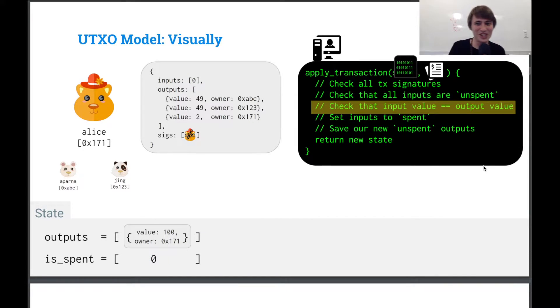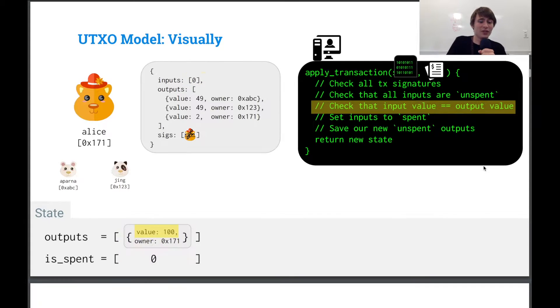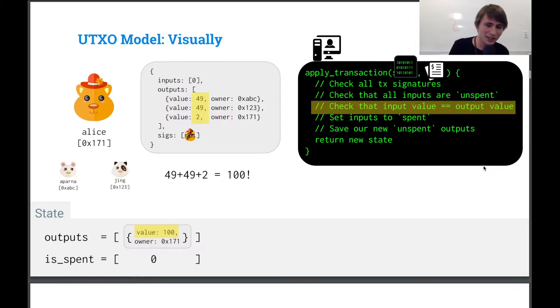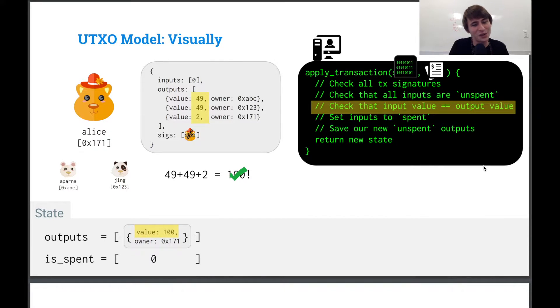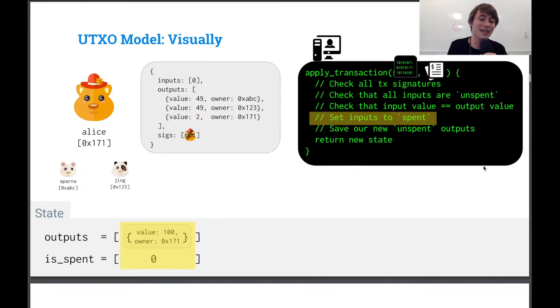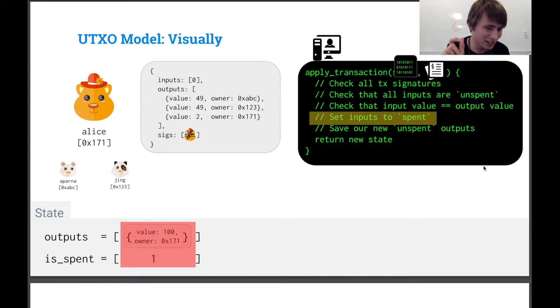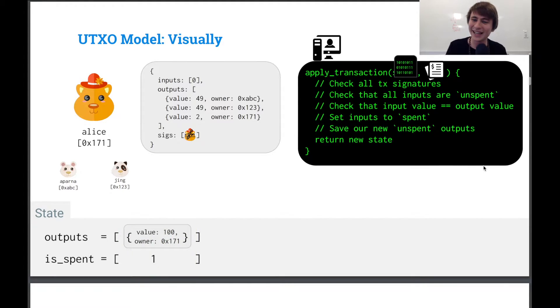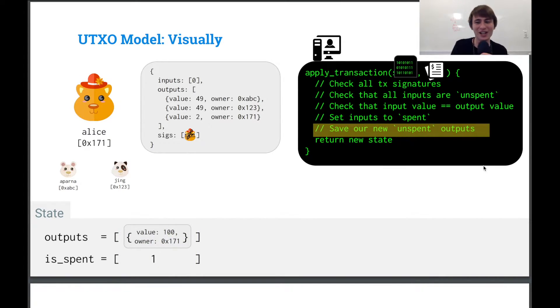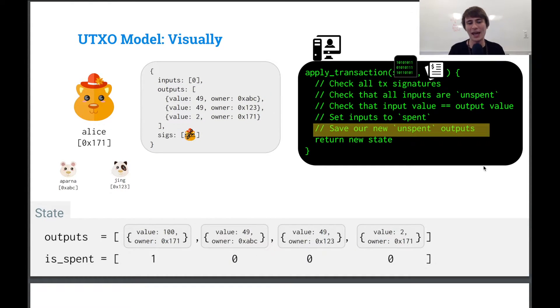Now we check the input equals the output value. So 149 plus 49 plus two, if I do my math correctly, then it's 100. And so that works. And then we set the input to spent. So boom, now that UTXO is spent. And so it's no longer a UTXO. It's just a TXO. And we then save our new unspent outputs. And so boom, we put them in our state object and we're done.